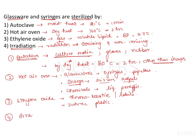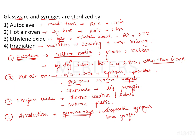For irradiation, the most commonly used ionizing radiation is gamma rays. Important indications for gamma rays include disposable syringes, bone grafts, skin grafts, other tissue grafts, and surgical catgut. Non-ionizing radiation such as infrared can be used for catheters and syringes, while UV radiation is mainly used to disinfect enclosed areas like laboratories and operation theaters.